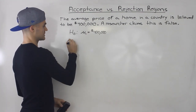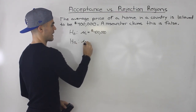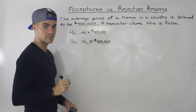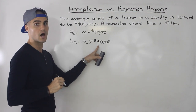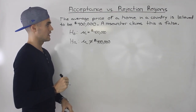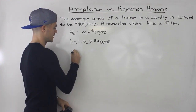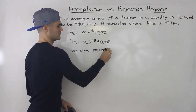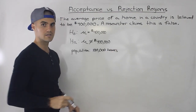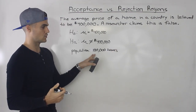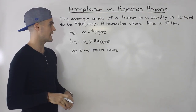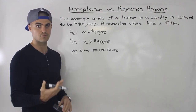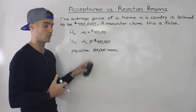A researcher claims this is false, coming up with an alternative hypothesis saying they don't believe the average price of a home is $400,000 anymore. For this example, let's assume that in the population there are 100,000 homes. We don't have the resources to go to all 100,000 homes and value them, so we have to take a sample and draw conclusions from it about the population.